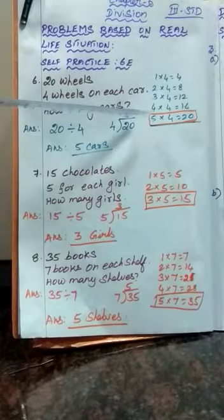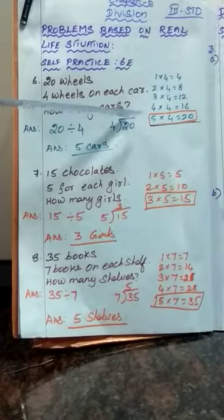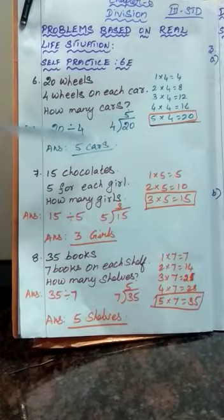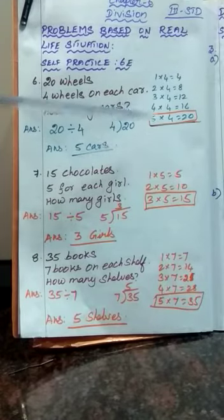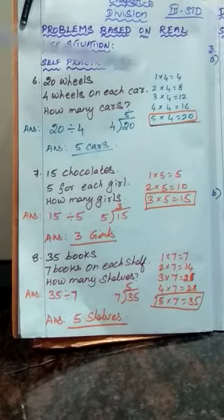What is the quotient here? That is your answer. The quotient is 5. So your answer is 5 cars. The 5 cars contain 20 wheels.